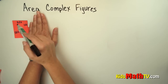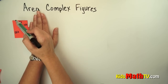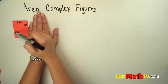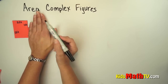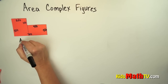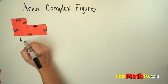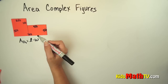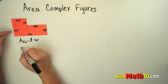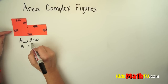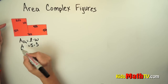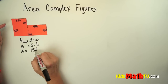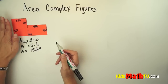For right now I am just going to worry about this rectangle. This rectangle has a length of 5 and a width of 3 — you could call it a length of 3 and a width of 5 either way. To find the area of rectangle 1, we go length times width. So area equals 5 times 3, and that area equals 15 square feet.